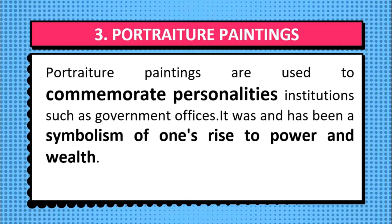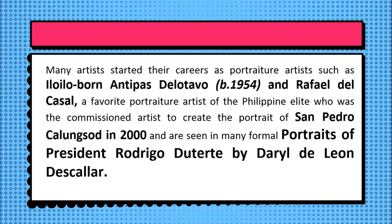Next is portraiture paintings. These are used to commemorate personalities and are seen in many formal institutions such as government offices. It started with the rise of the ilustrados during the Spanish colonial times and has been a symbolism of one's rise to power and wealth. Many artists started their careers as portraiture artists. The latest notable example is the official portrait of President Rodrigo Duterte by Davao artist Daro de Leon Descaulio.